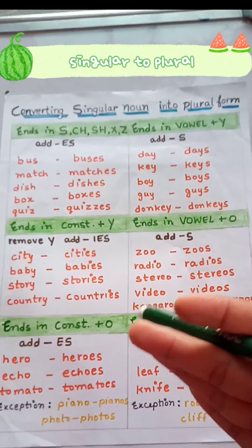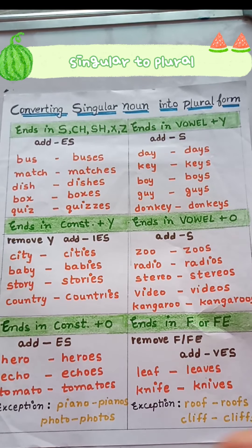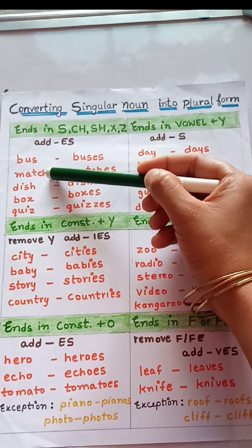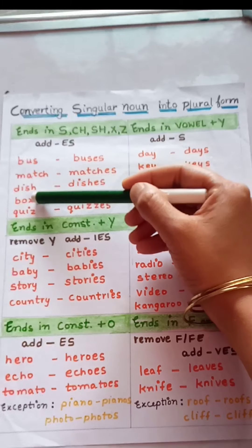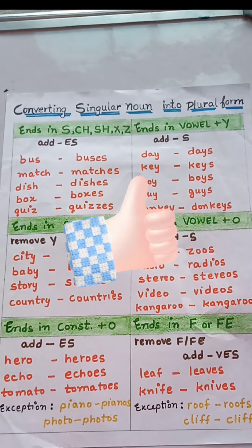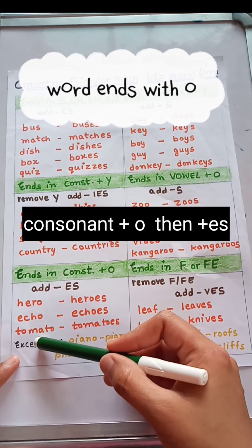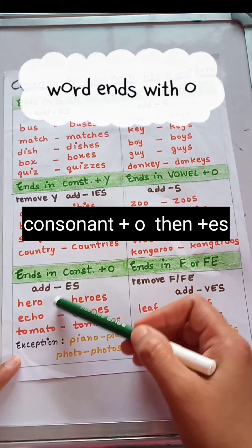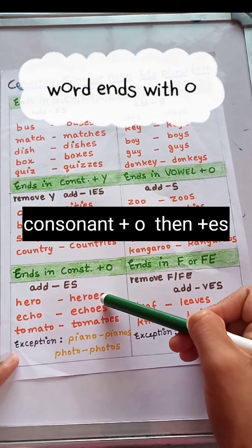To convert singular to plural we always add s, but there are some words in which we add es. When the word ends with s, ch, sh, x, or z, then we add es to make them plural. When the word ends with a consonant followed by o, then we add es to make them plural.